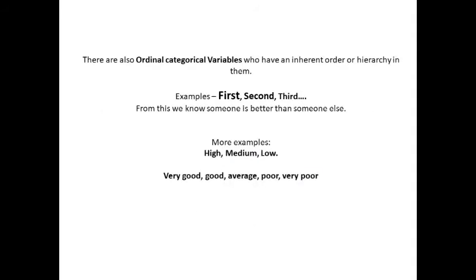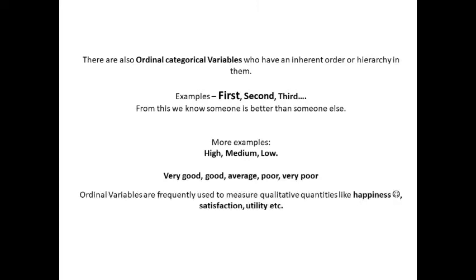There are also ordinal categorical variables which have an inherent order or hierarchy in them. Example: first, second, third. From this, we know that someone is better than someone else. More examples like high, medium, low or very good, good, average, poor, very poor.